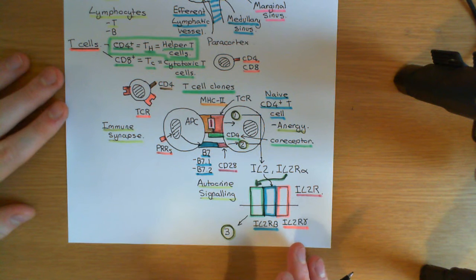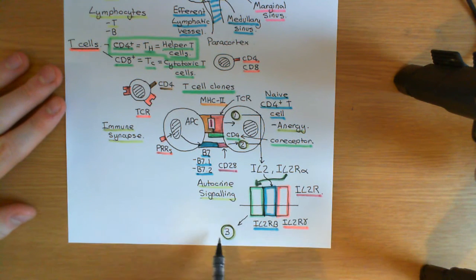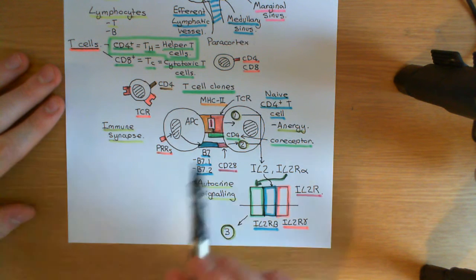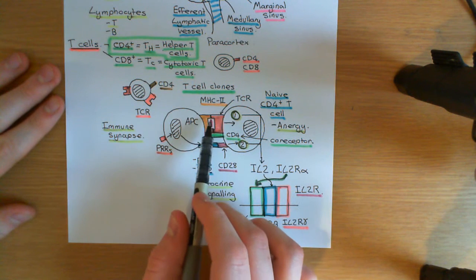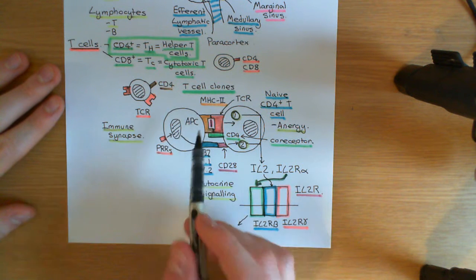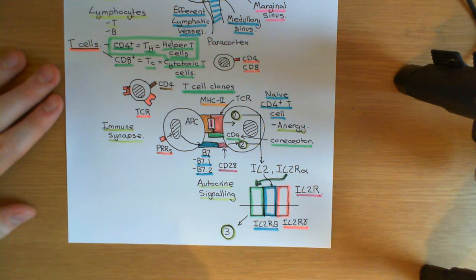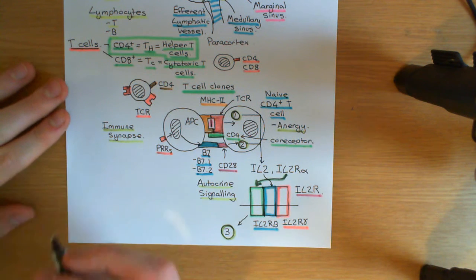Continuing on with the adaptive immune response to tuberculosis, we have just got signal 3 for activation inside this naive CD4-positive T-cell, which has a T-cell receptor design against one of the peptide fragments from an antigen of mycobacterium tuberculosis, and we want to understand what's now going to happen to this naive CD4-positive T-cell.